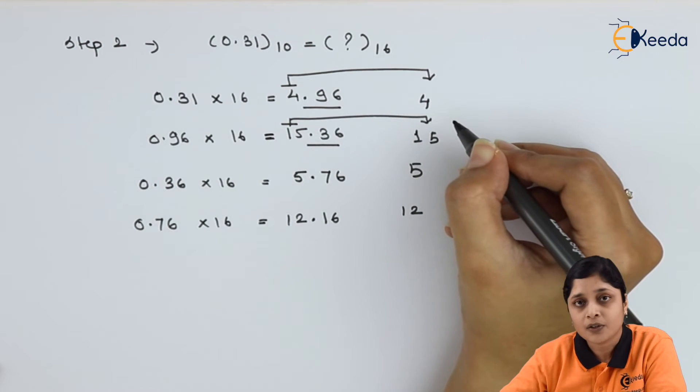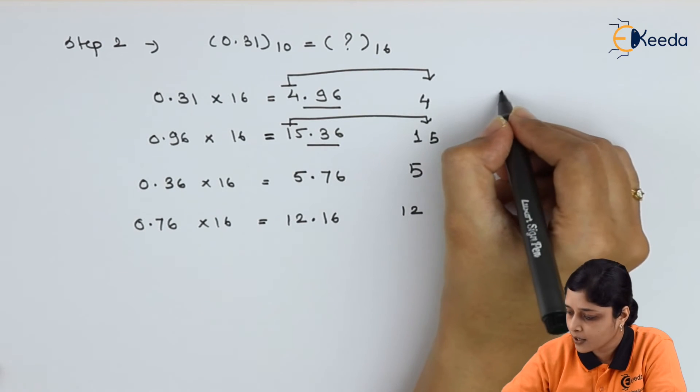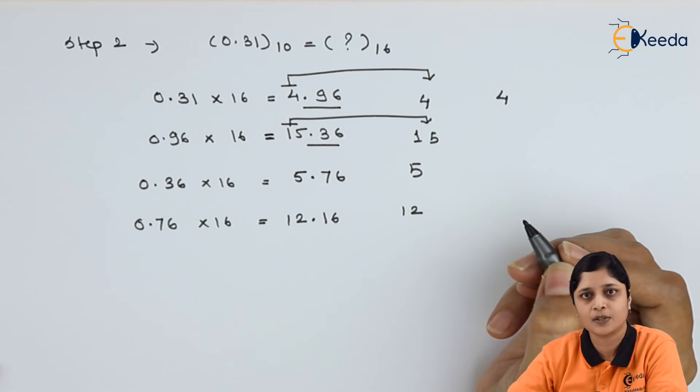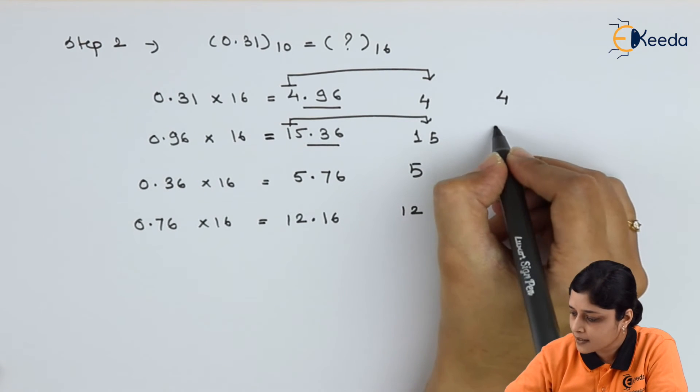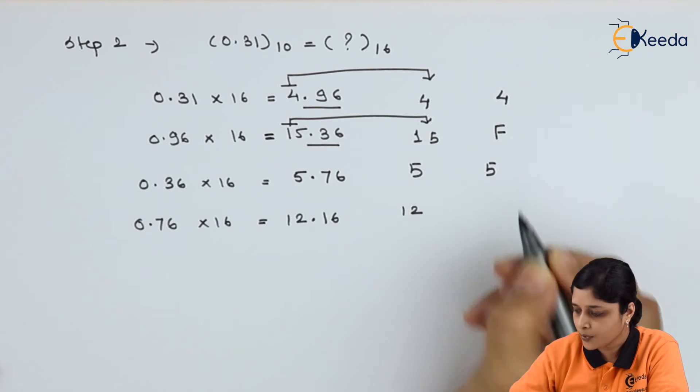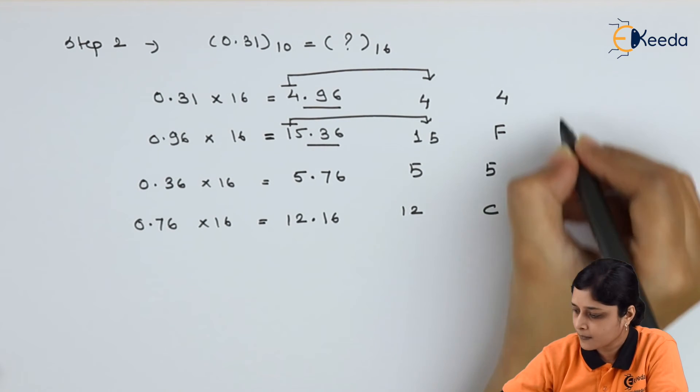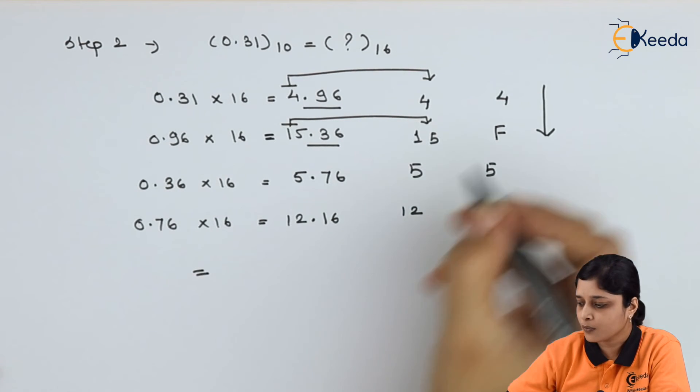Now here you have to get hexadecimal number system. So write down: for 4, hexadecimal is 4; for 15, hexadecimal is F; for 5, hexadecimal is 5; for 12, hexadecimal is C.